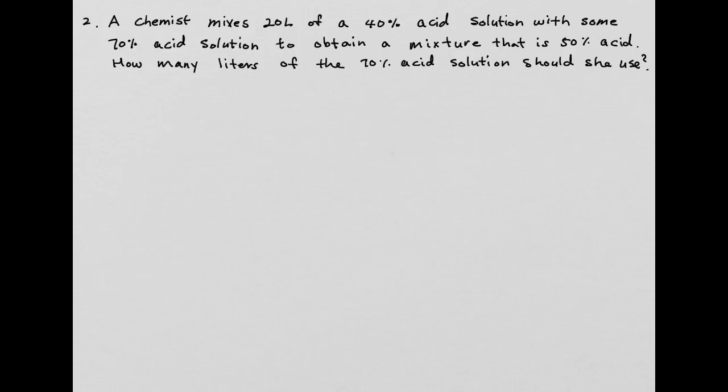Let's look at example two. Don't forget the formulas we used in example one — that's what we're going to use. You may have to read the problem a few times, but understand what you're looking for. It says: how many liters of 70% acid solution should be used? So this is going to be the unknown amount X.